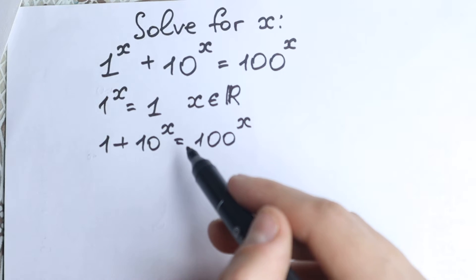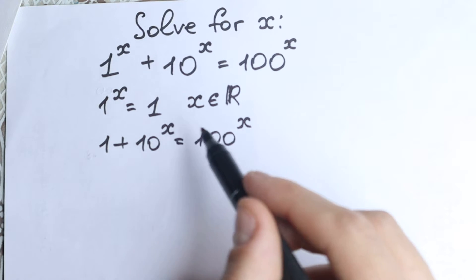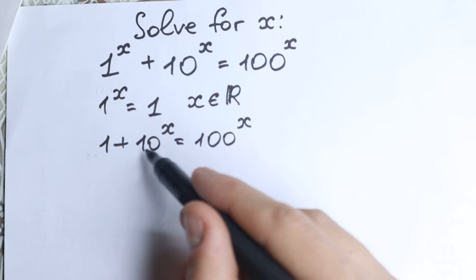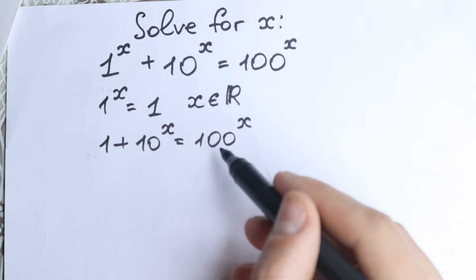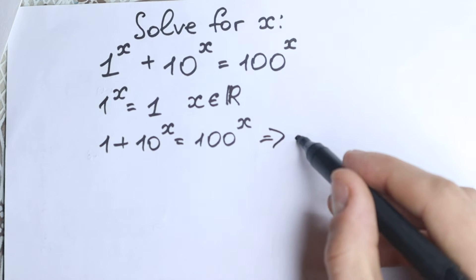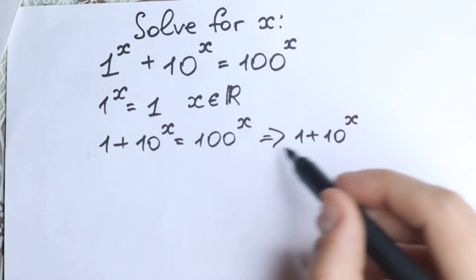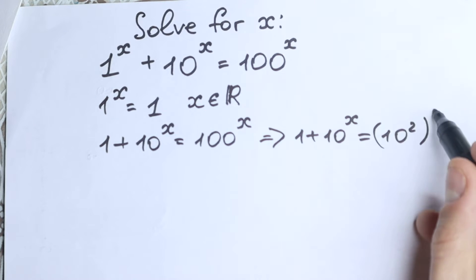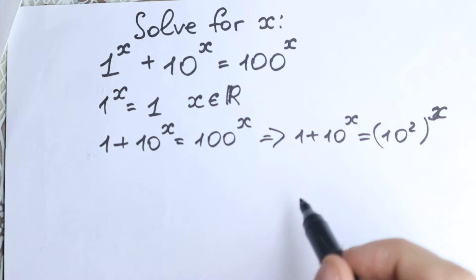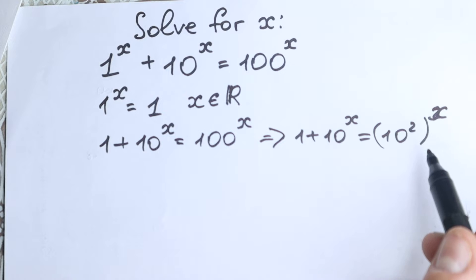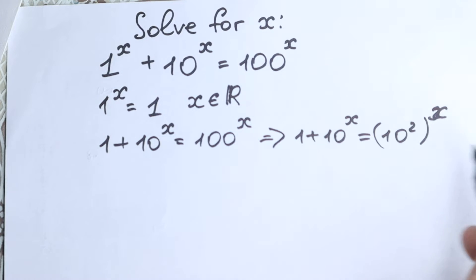My suggestion for this equation is to create a same base. This is really interesting because 10 and 100 are great numbers — we can write 100 as 10 squared. So 100 to the power x becomes 10 squared to the power x. We need to apply the rule of interchange, which is really important.